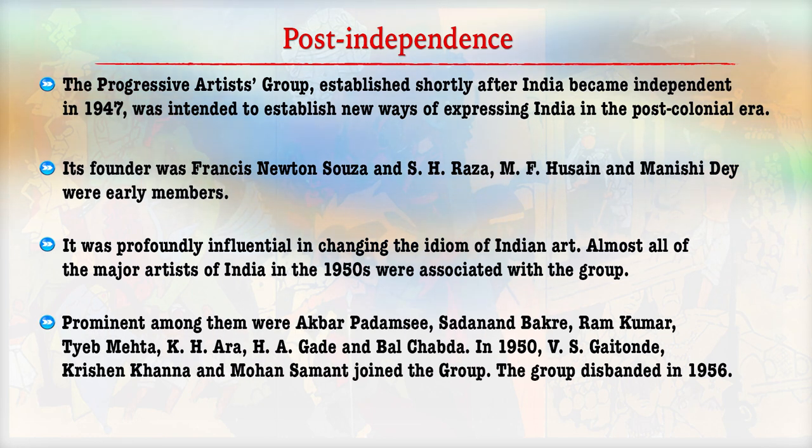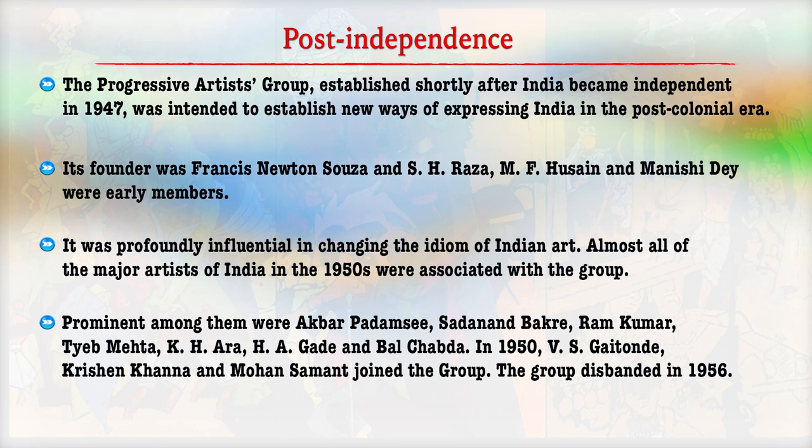The Progressive Artists' Group had a profound influence in changing the overall Indian painting art. Almost all the major painters of India in 1950 were associated with the group. Prominent among them were Ram Kumar, Tayyab Mehta, K.H. Ara, and Jabra. In 1950, Krishna Kanan and Mohan Samant also joined the group. However, the group disbanded in 1956.